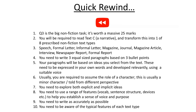Question Three is the big nonfiction task. The smaller nonfiction task — the summary writing task — is worth 15 marks. This one is worth a massive 25 marks. You are required to read Text C, which is always a narrative, always a story, and it's your job to transform this into one of the eight prescribed nonfiction text types: speech, formal letter, informal letter, magazine article, journal, interview, newspaper report, and formal report.